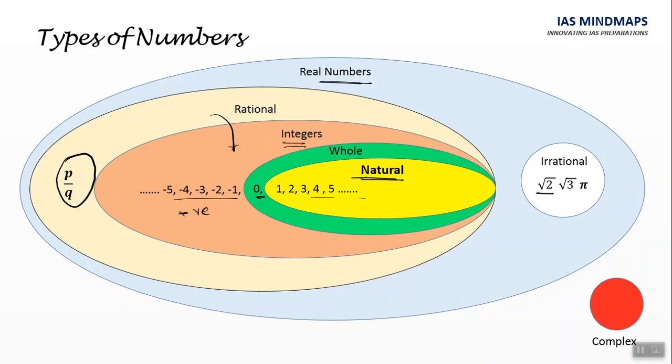Irrational numbers are root 2, root 3, root 5, then pi, etc. Apart from these real numbers, we have these complex numbers, where we got term like under root minus 1, that is i.